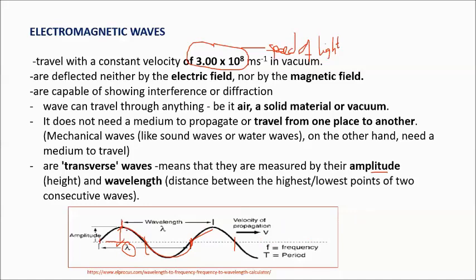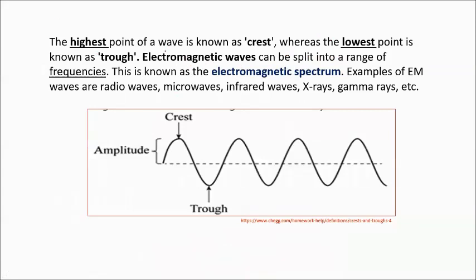The direction of propagation in a transverse wave: from the resting position, when energy is applied, the wave forms and propagation moves away from the disturbance — in this example, to the right. The direction of propagation is always away from the source of disturbance. The highest point of a wave is called the crest, and the lowest is the trough.